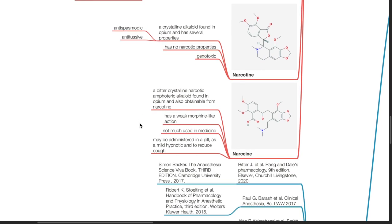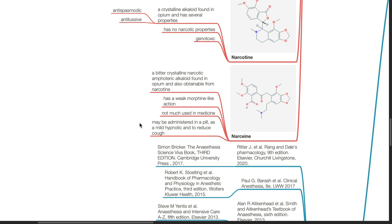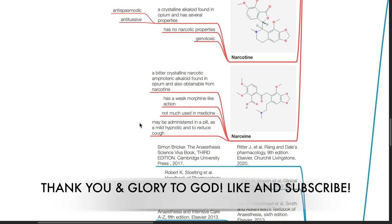Narceine is another opiate. It is a bitter crystalline narcotic amphoteric alkaloid found in opium and also obtainable from noscapine. It has a weak morphine like action. It is not much used in medicine. It may be administered in a pill as a mild hypnotic and to reduce cough.